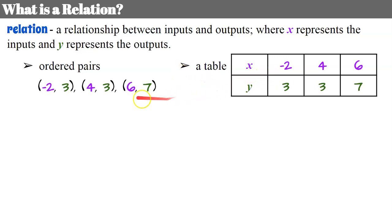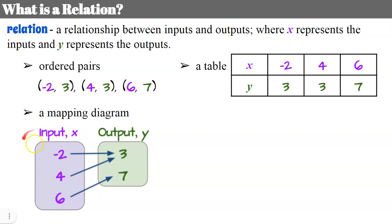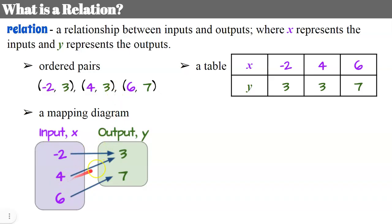We could see them in a table — it's the same ordered pairs just in a table. We have our inputs X: negative 2, 4, and 6, and our outputs Y: 3, 3, and 7. We could also do a mapping diagram where we have our inputs in one set in numerical order — negative 2, 4, and 6 — and our outputs 3 and 7, noting that two outputs are the same so we only list it once. Then we map: negative 2 maps to 3, 4 maps to 3, and 6 maps to 7, noting that inputs negative 2 and 4 both have outputs of 3.